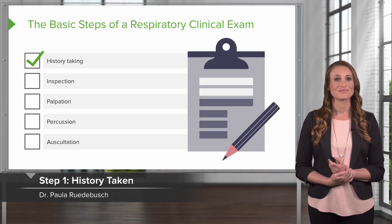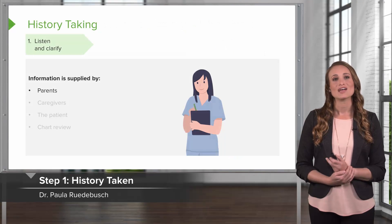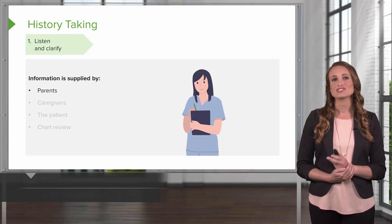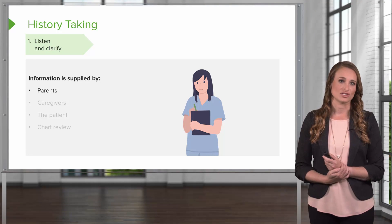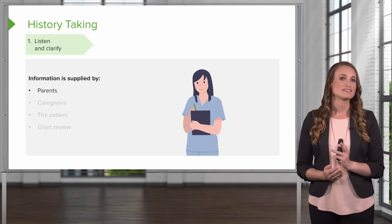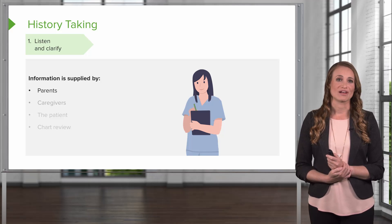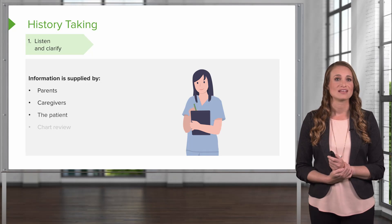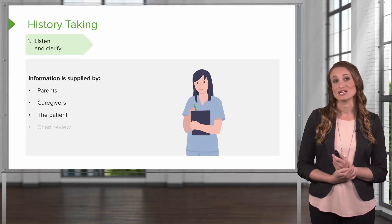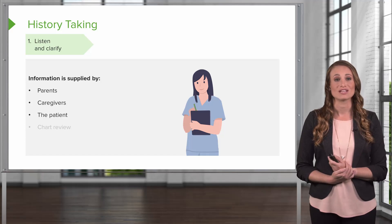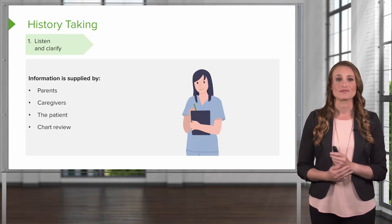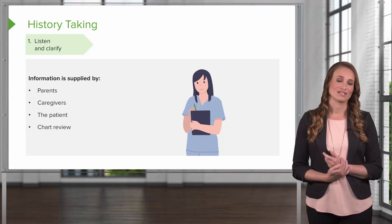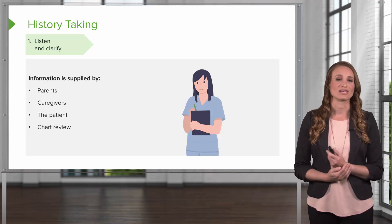First, the history. When you take a history from a patient, you need to really listen carefully. Ask clarifying questions, and this information is going to usually come from the parents and caregivers. Sometimes, depending on the patient's age, you can also interview the child. And you want to do a thorough chart review — you will get a lot of your clinical answers by looking through the chart.